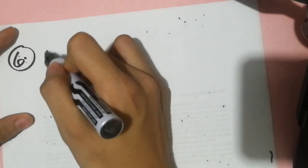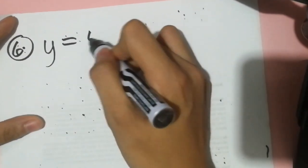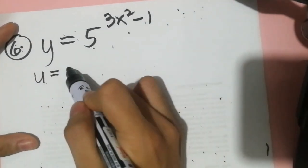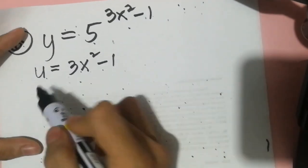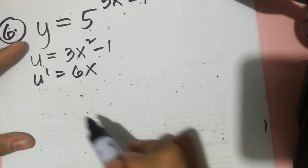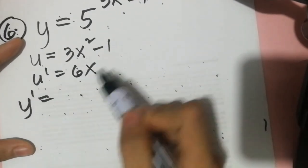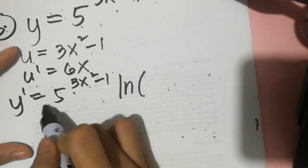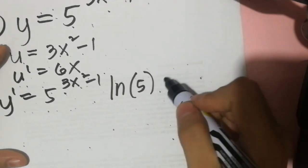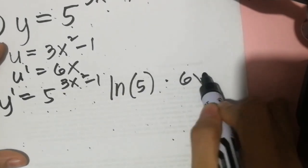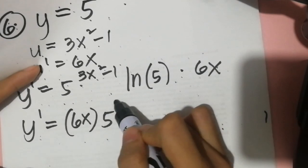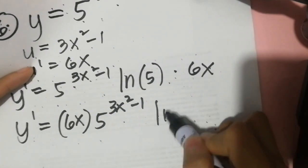Last example, number 6: y is equal to 5 raised to 3x squared minus 1. Let u equal the exponent 3x squared minus 1, so u prime is 6x. Then y prime equals 5 raised to 3x squared minus 1 times ln 5 times the derivative of u, which is 6x. Therefore, the derivative of y is 6x times 5 raised to 3x squared minus 1 times ln 5.